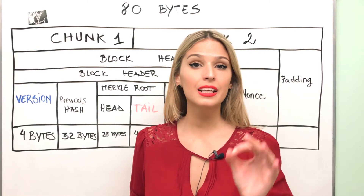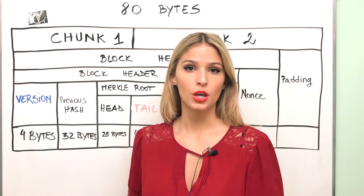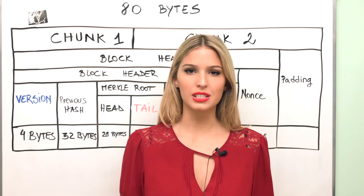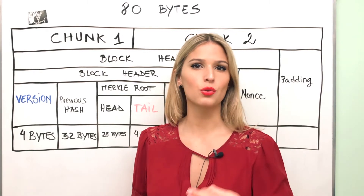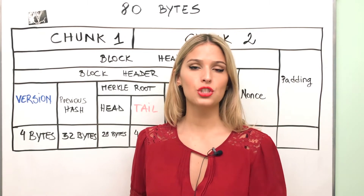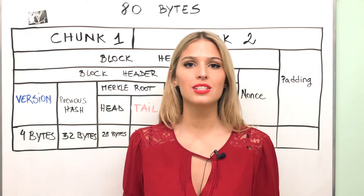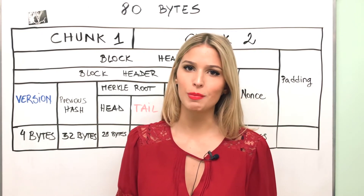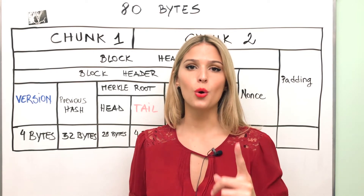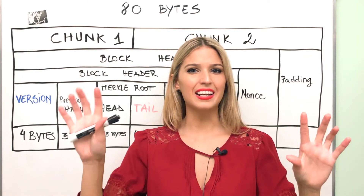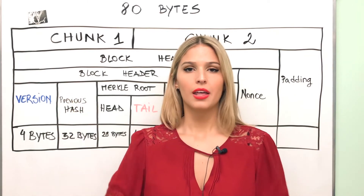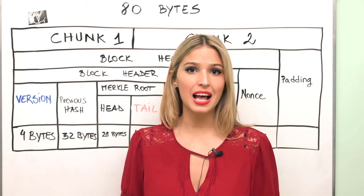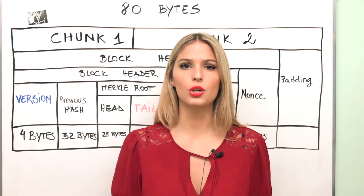We're going to make a little recap from our last video. Bitcoin is all about keeping the transactions flowing in the system in a decentralized way. Those transactions are also messages, but those messages are way too long, so we need to make a hash of those messages. In order to do so we need a hash function and an algorithm. The algorithm we use the most in Bitcoin is the SHA-256 algorithm.